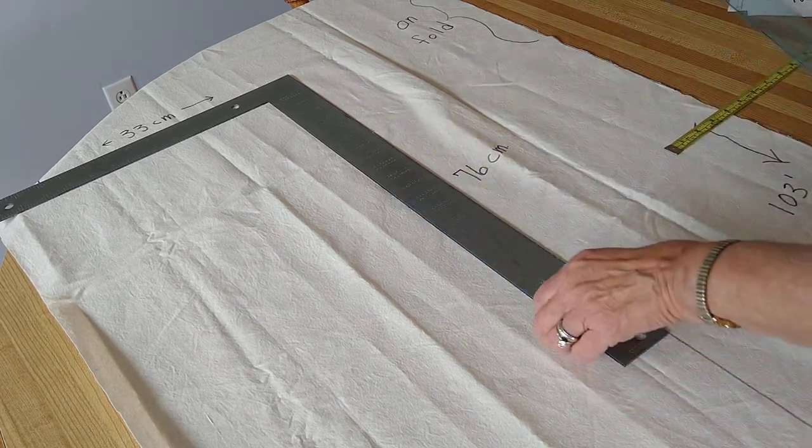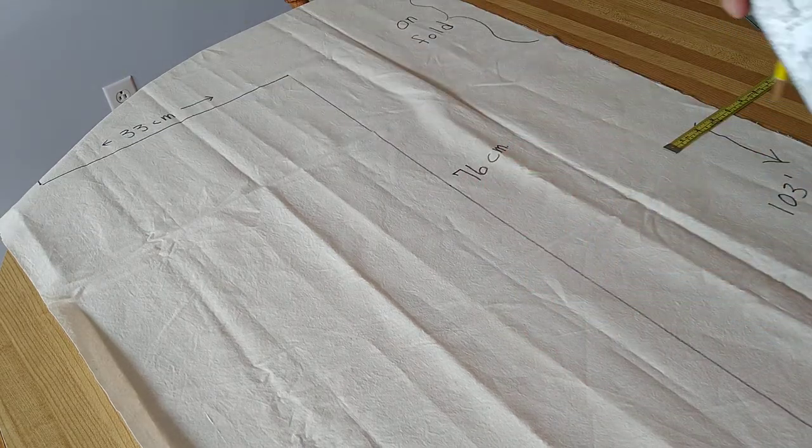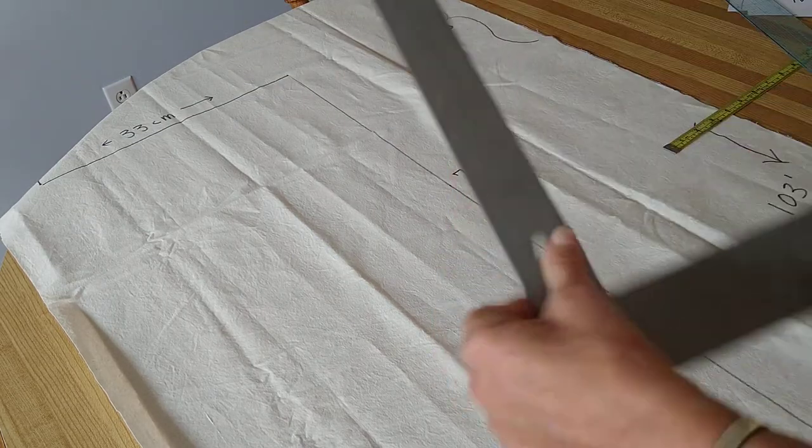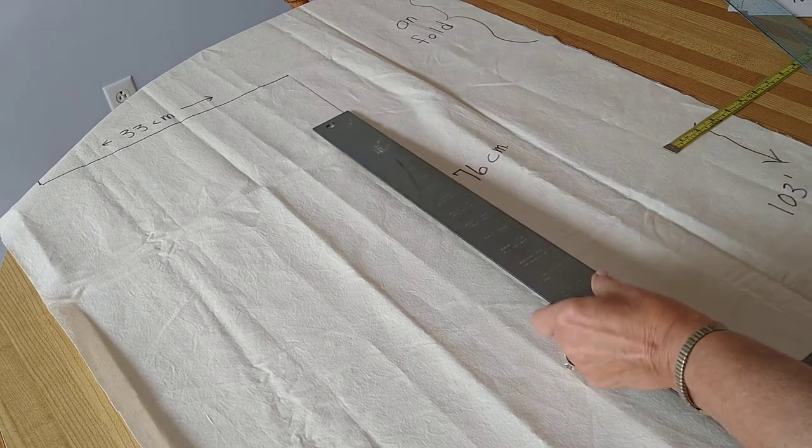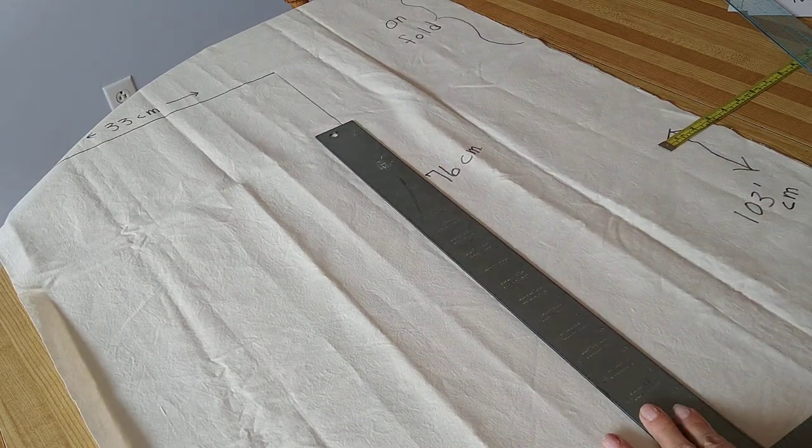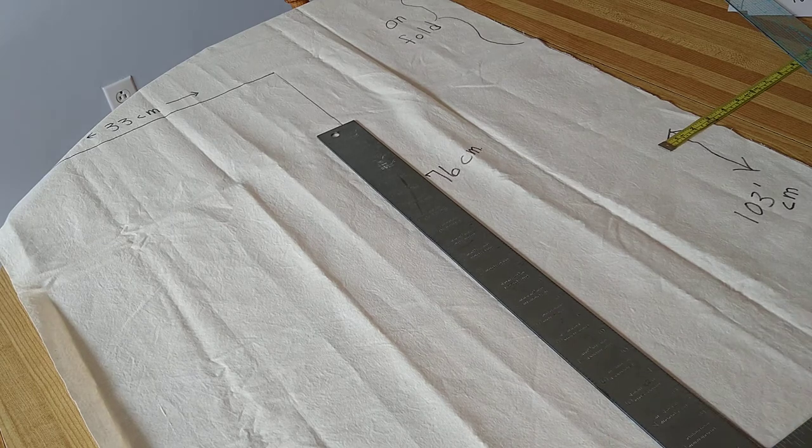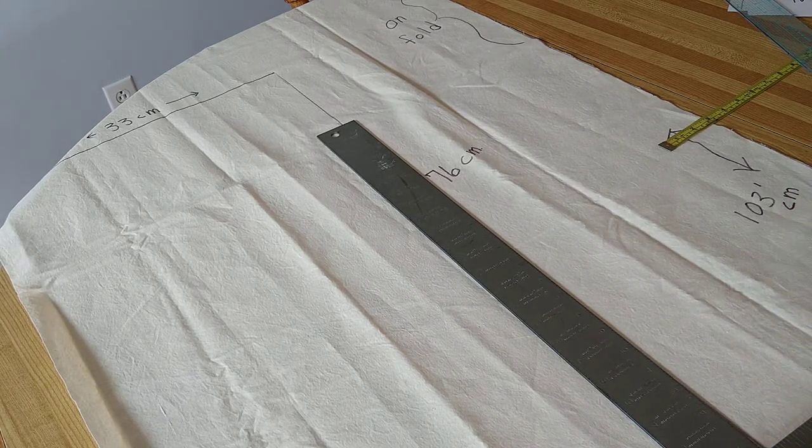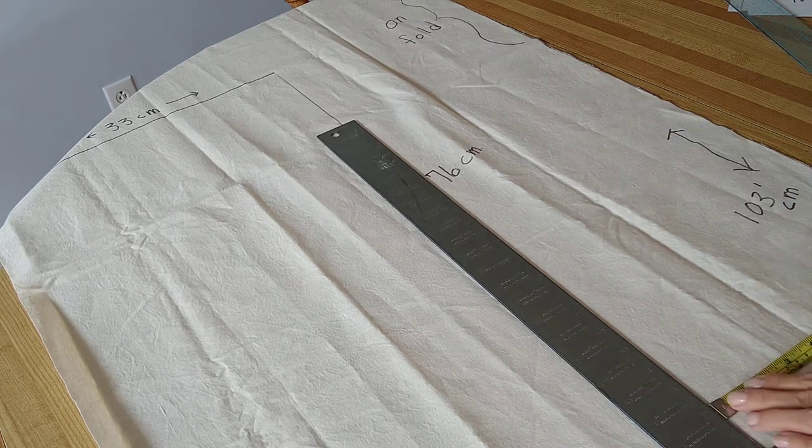The last measurement will be the bottom. Let's turn it this way. Run it along that line 29 centimeters across. Double check it.